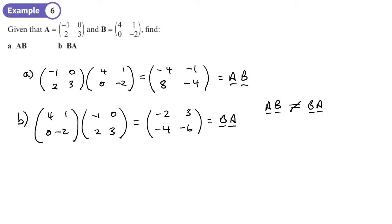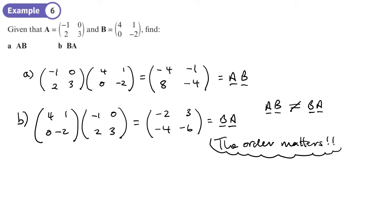So in this example, AB does not equal BA, unlike normal multiplication where order doesn't matter. For matrices, the order in which we do multiplication matters. The first letter is the first matrix; the second letter is the second matrix. Don't change the order.